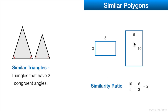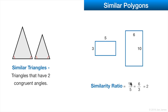A similarity ratio: we said that the sides can be proportionate. Here we see two similar rectangles with a long side and a short side. The short side of one is 3, the short side of the other is 6 — so this one is 2 times longer. The long side is 5 and 10 respectively. So 10 over 5 equals 6 over 3, which equals 2. Corresponding sides should have the same similarity ratio — in this case 2 — if the two polygons are similar.